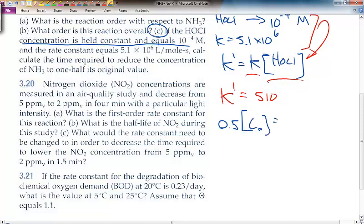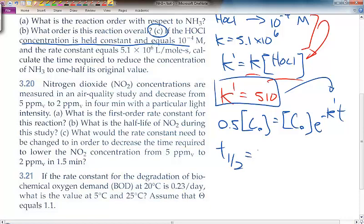C equals C naught times e to the minus K prime T. We can solve for that, or we can simplify that as T half equals 0.693 divided by K prime.